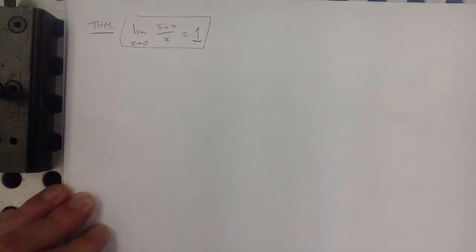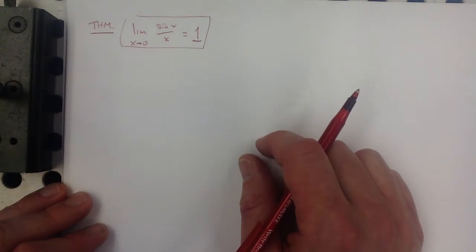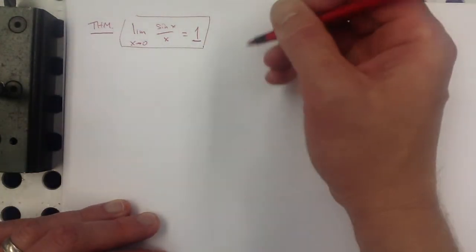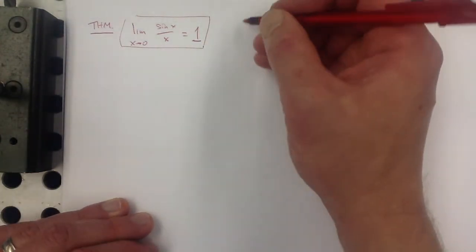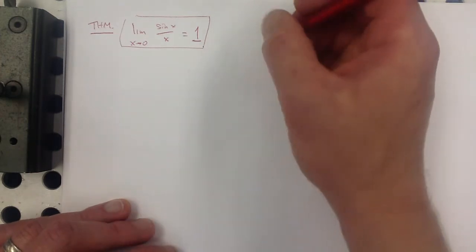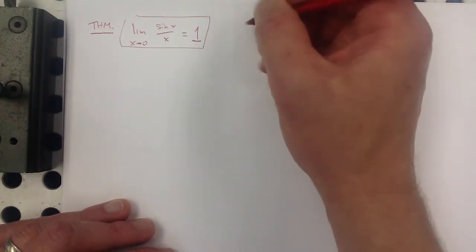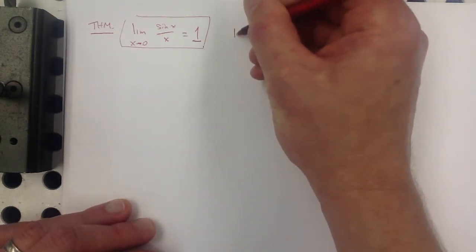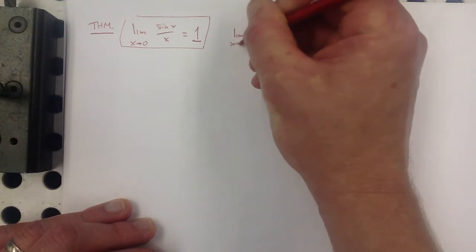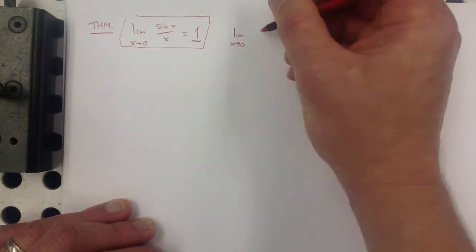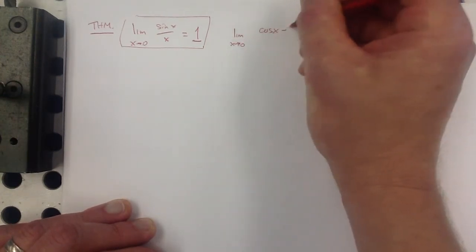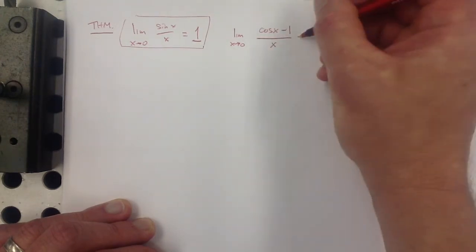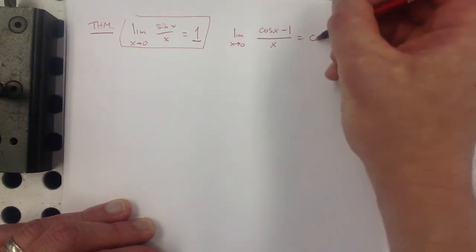That's a new limit result — we'll call it a theorem. The limit as x approaches 0 of sine x over x equals 1. We justified this using the squeeze theorem. There's another result you can get in a similar way: the limit as x approaches 0 of (cosine x minus 1) over x equals 0.